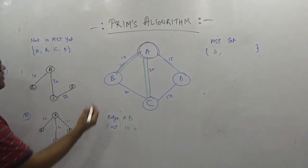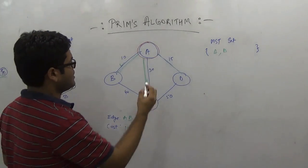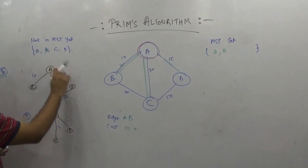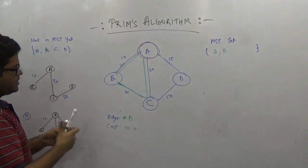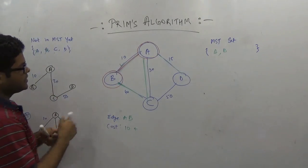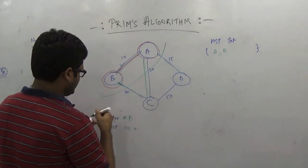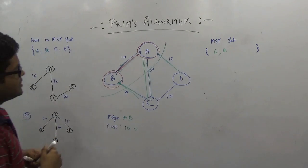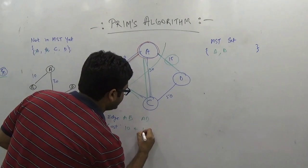Now we have another vertex in our MST set: B. The vertices in our MST set, A and B, are connected to the vertices not yet in the MST set, C and D, by edges BC, AD, and AC. We want to pick the edge with the least cost. We can see that AD has the least cost, so we include AD and write its cost.